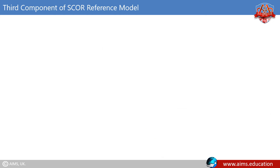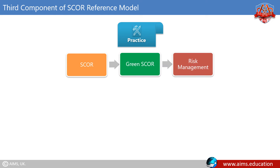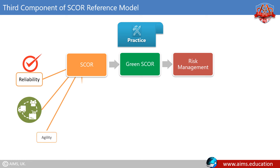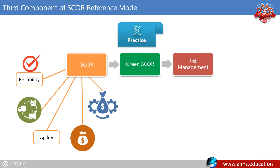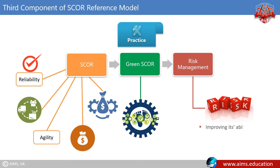The third component of the SCOR reference model is Practices. This section consists of best practices organized by original objective, such as SCOR, Green SCOR, and risk management. SCOR improves overall supply chain operational performance by focusing on reliability, responsiveness, agility, cost, and asset management efficiency. Green SCOR improves the environmental footprint of the supply chain. Risk management improves the handling of undesired events by improving the ability to recover from them.